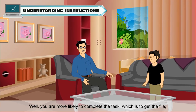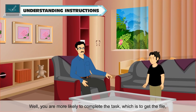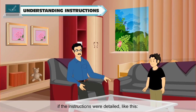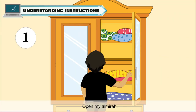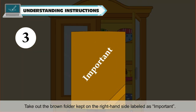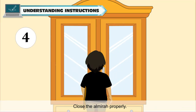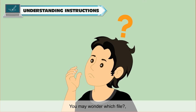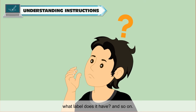You are more likely to complete the task — which is to get the file — if the instructions were detailed, like: open my almirah, look in the second rack from top, take out the brown folder kept on the right-hand side labeled as important, close the almirah properly. Imagine if your father just told you to bring his office file. You may wonder: which file? Where is it kept? What label does it have? And so on.